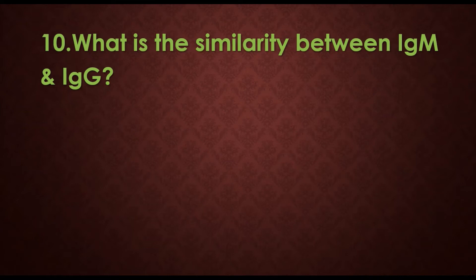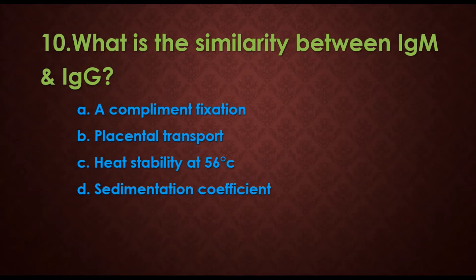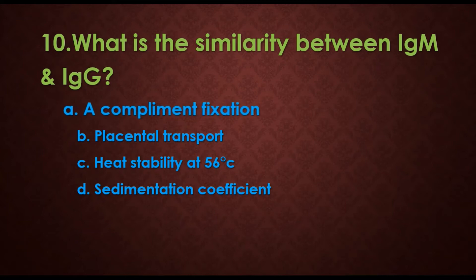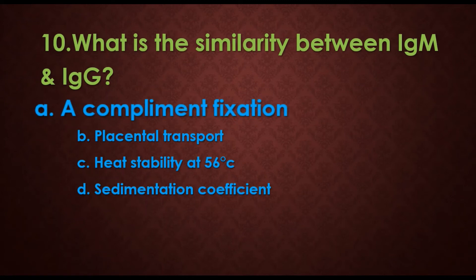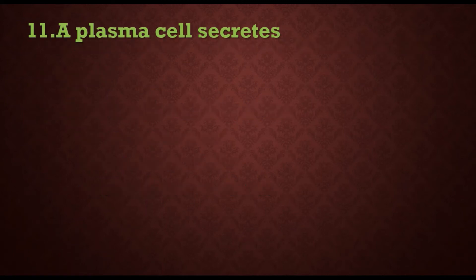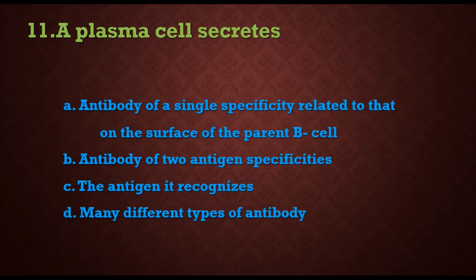Tenth question: what is the similarity between immunoglobulin M (IgM) and immunoglobulin G (IgG)? Options are: a) complement fixation, b) placental transport, c) heat stability at 56°C, d) sedimentation coefficient. Placental transport is only IgG, heat stability is only IgM, and sedimentation coefficient differs since IgM is the largest. So the answer is a) complement fixation, which is the similarity between IgM and IgG.